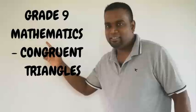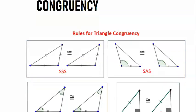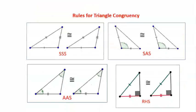Hi guys and welcome to another video. Today we are going to be looking at the topic congruency, and to be precise we're going to be looking at congruent triangles. Now first of all, the word congruency means identical. Congruent triangles are identical and they can be mirror images of each other.